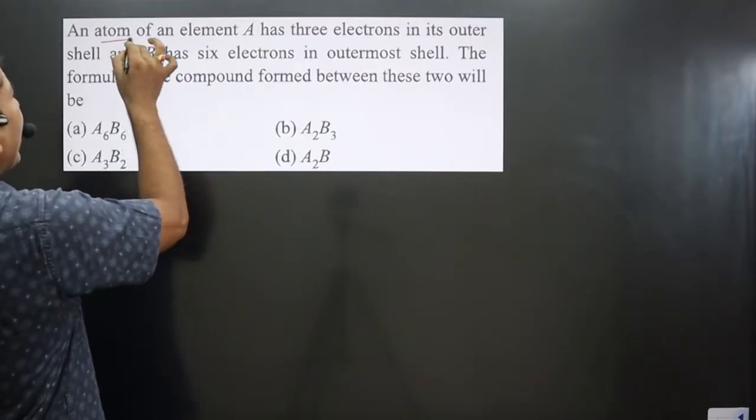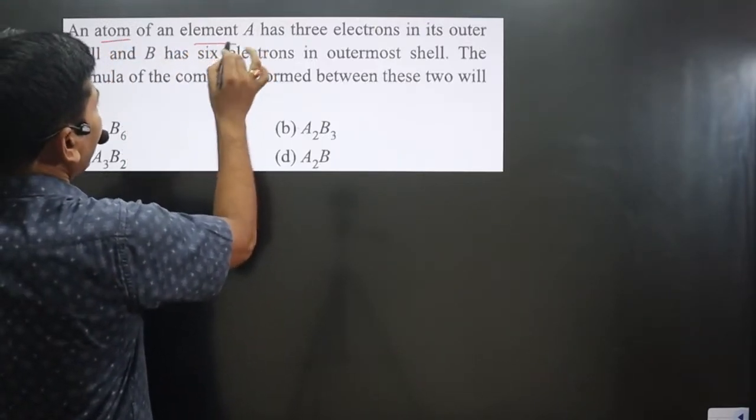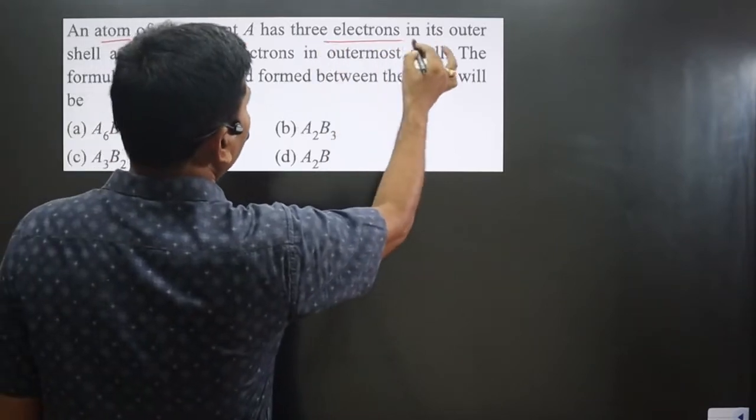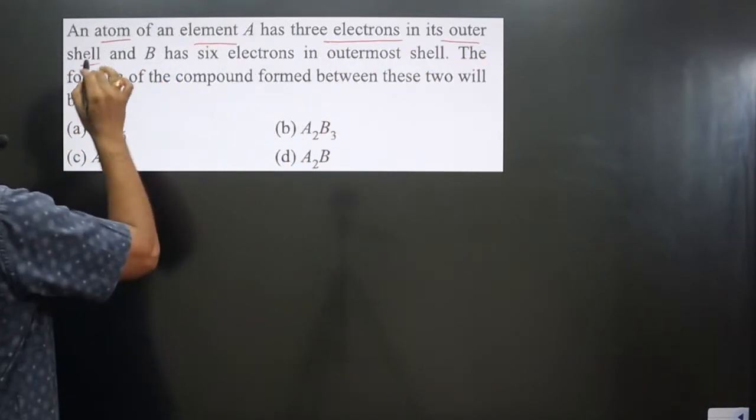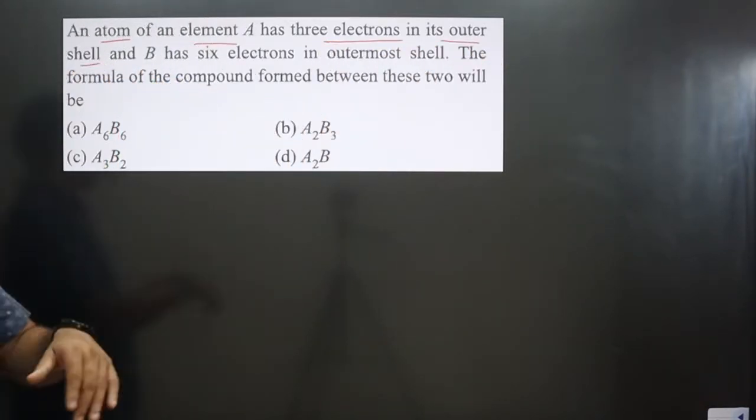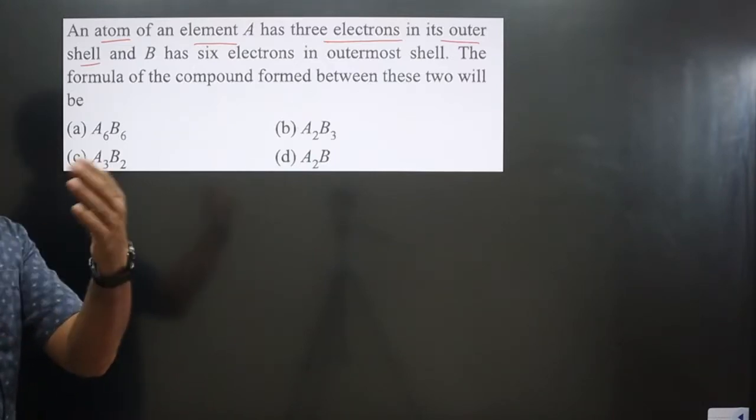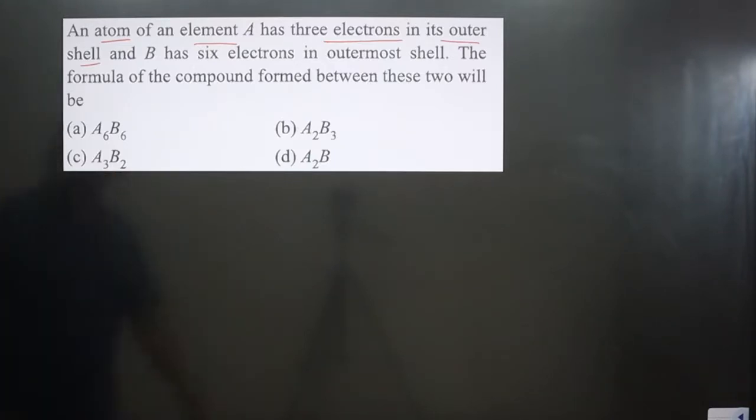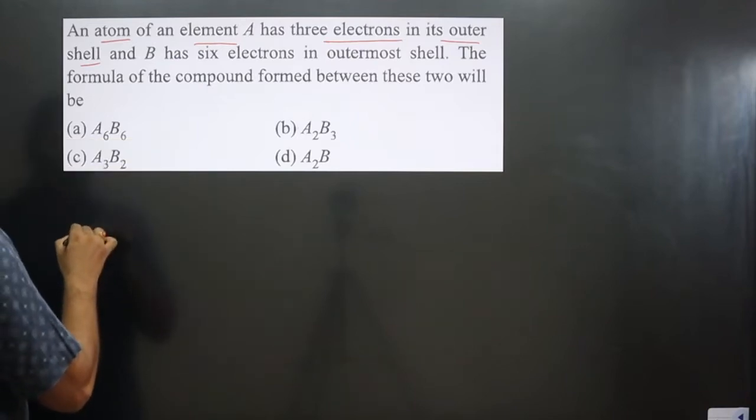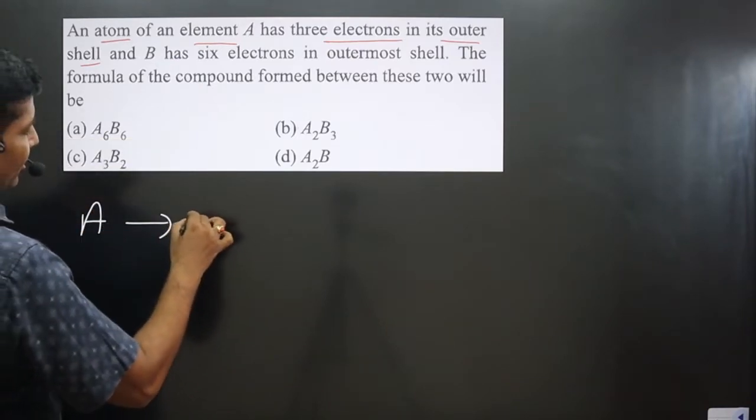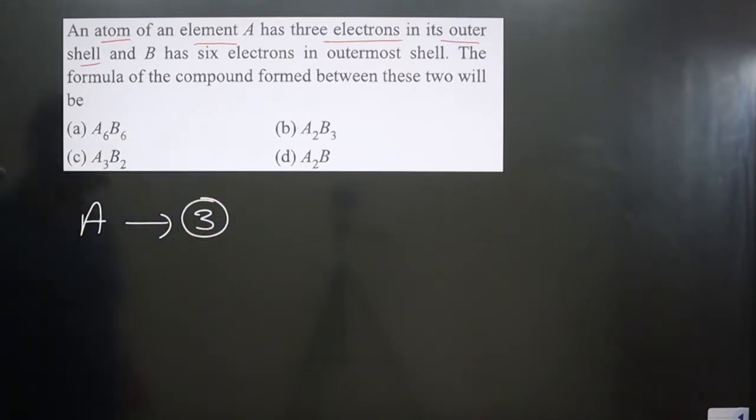The question says an atom of an element A has three electrons in its outermost shell. Three electrons are present in its outermost shell. Then we can say these are the valence electrons. Let me write here. A is having how many valence electrons? Three.